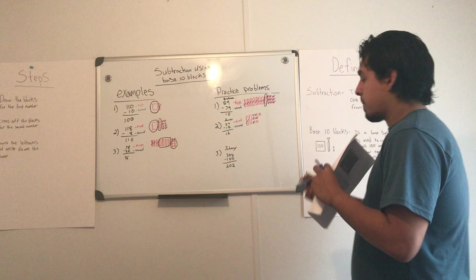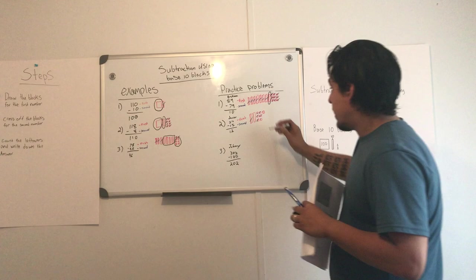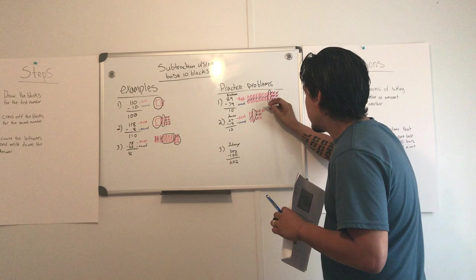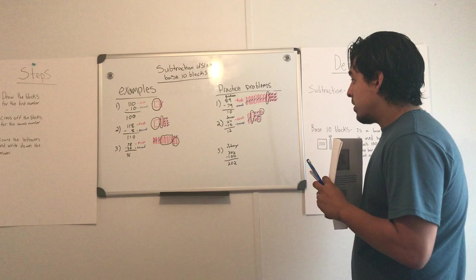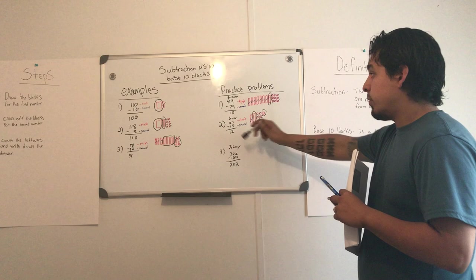Now for the third step, he did the same thing as Brianna and counted the leftovers. And he knows that there is one bar left over and two units left over. So that means he has 10, 11, 12 units. Good job.